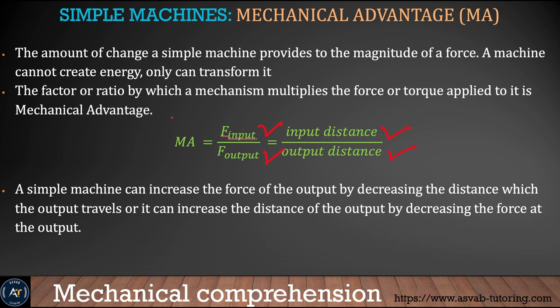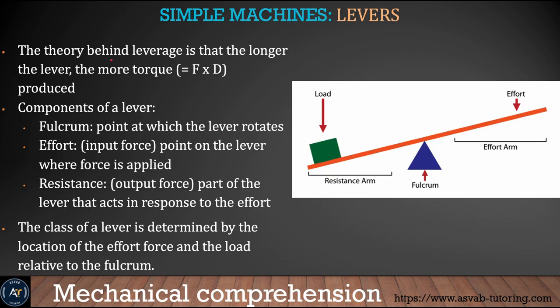The theory behind the lever is that the longer the lever provides you more torque. The different components of a lever are the fulcrum — the point at which the lever rotates — and you measure torque at the fulcrum. The effort is the point on the lever where force is applied, and the resistance is the output force, the part of the lever that acts in response to the effort.